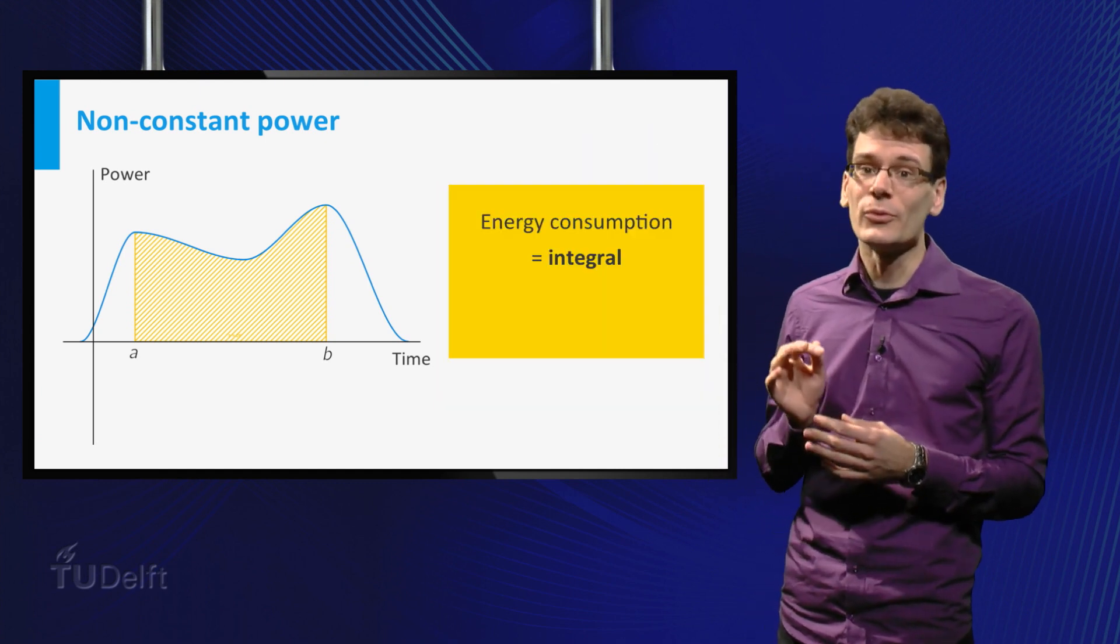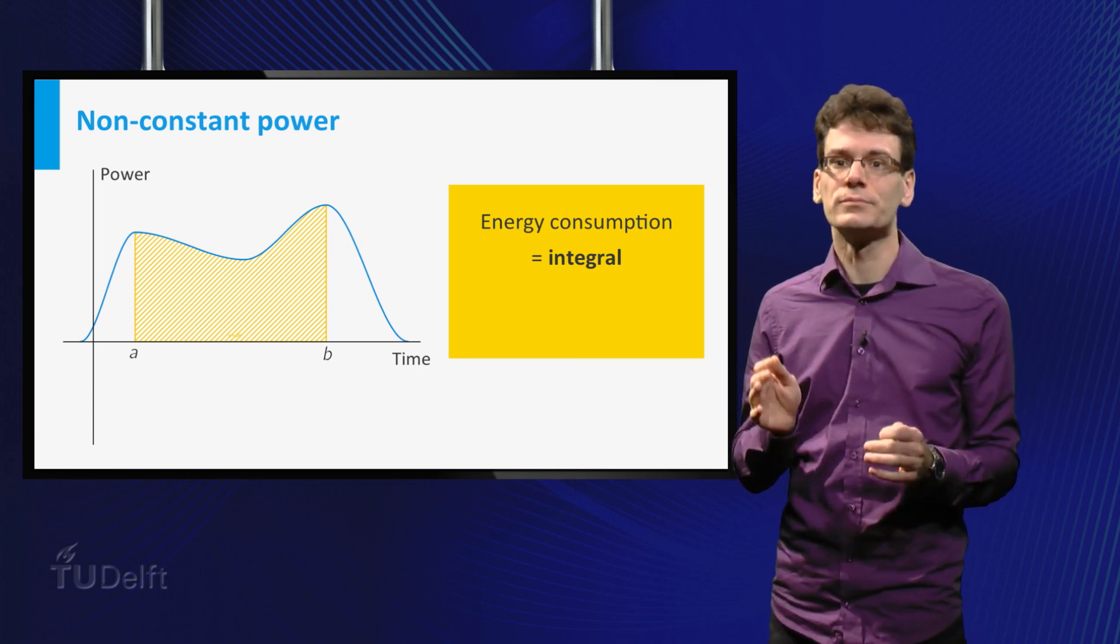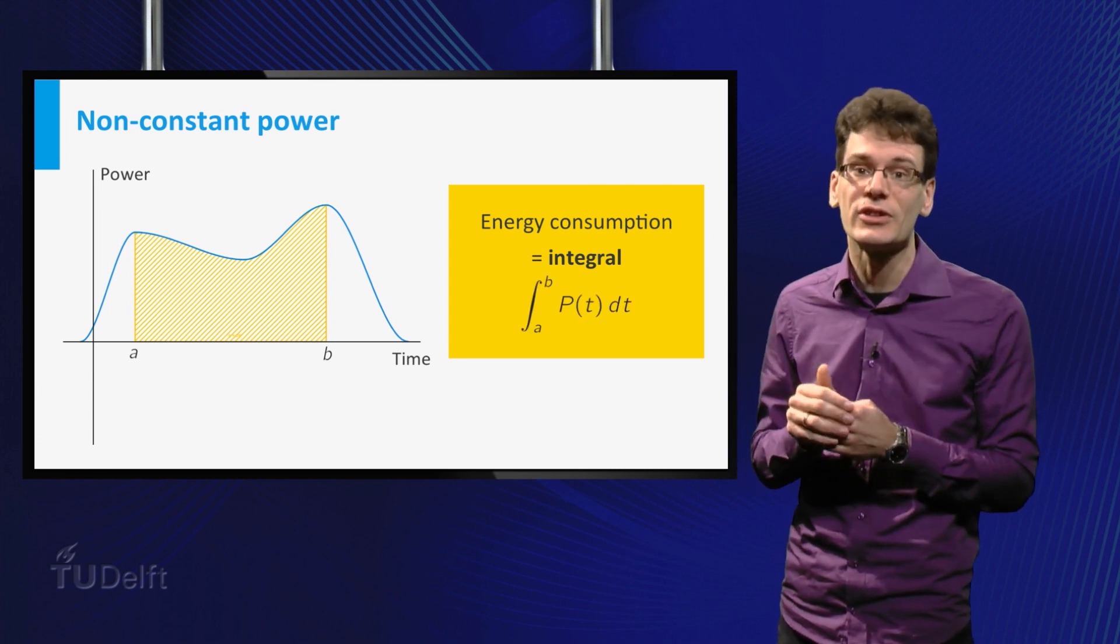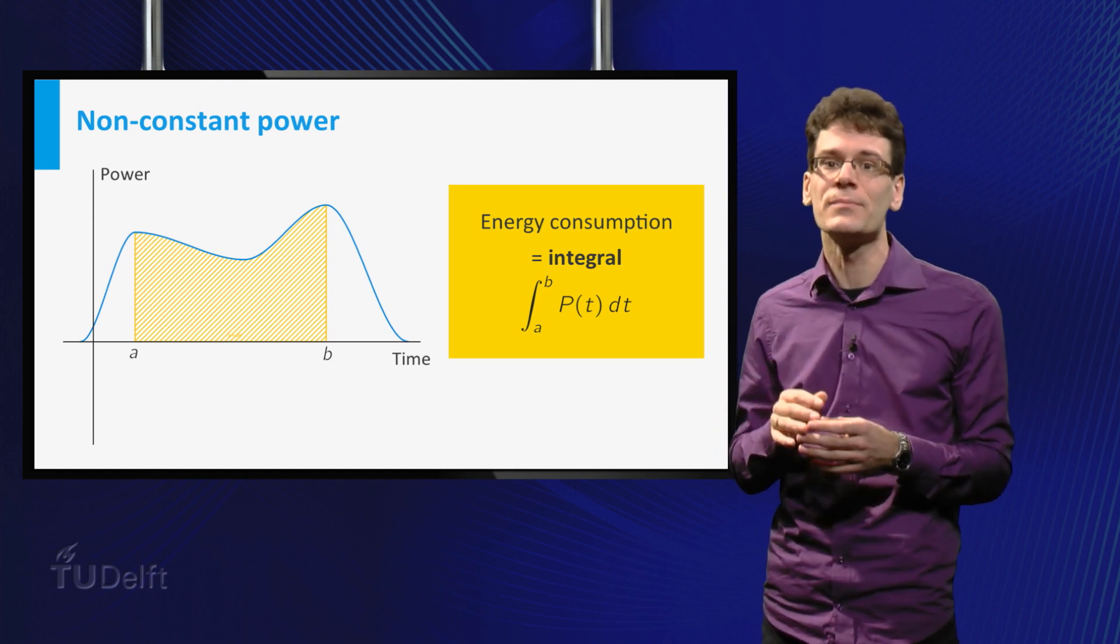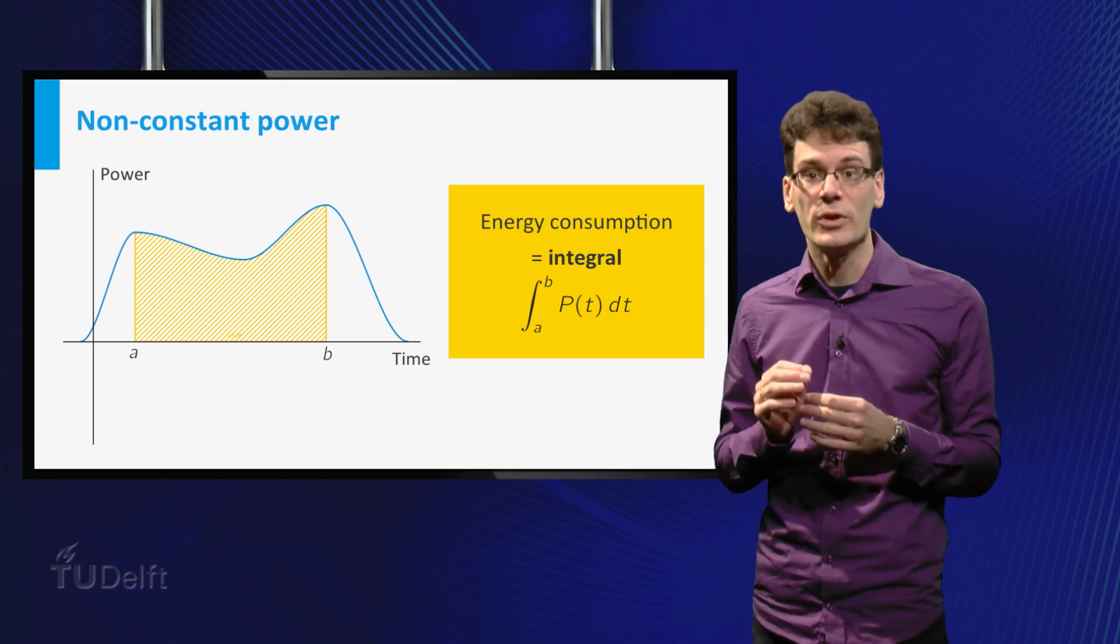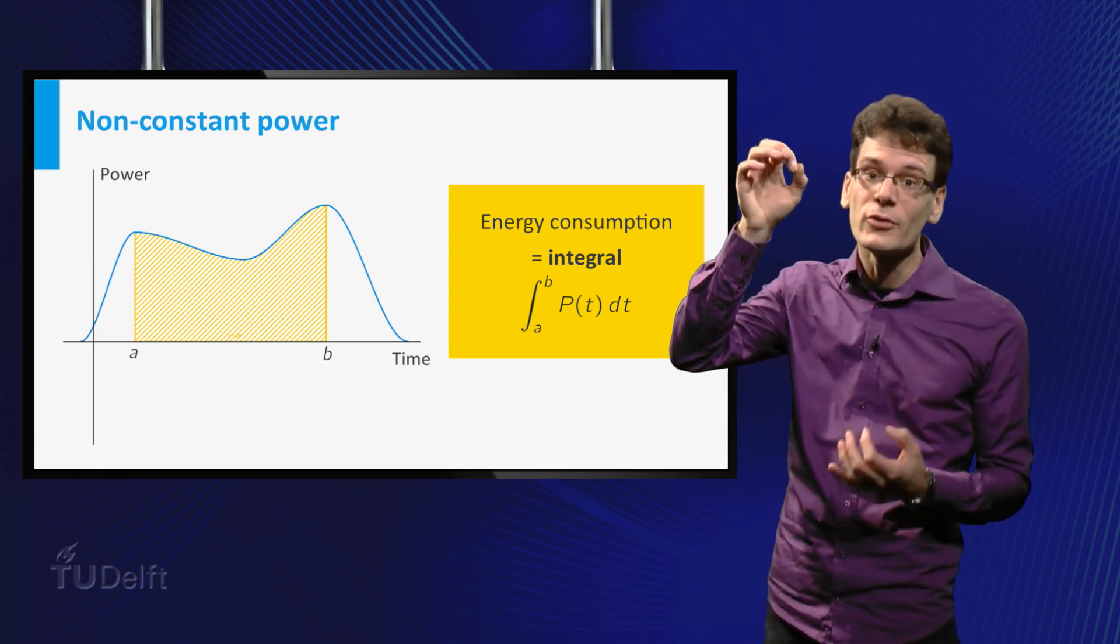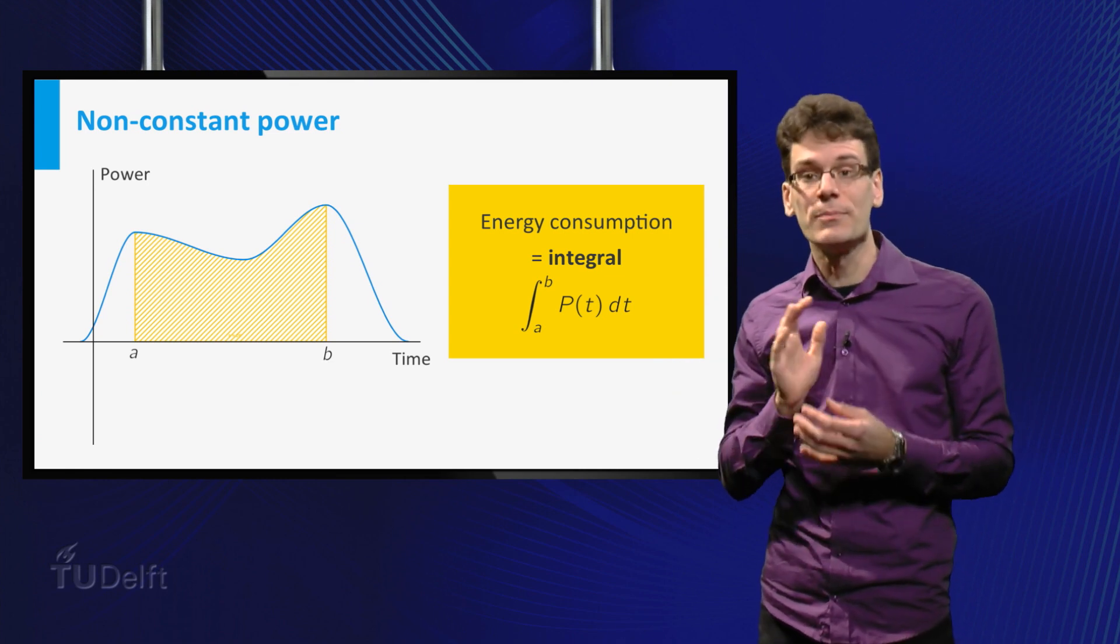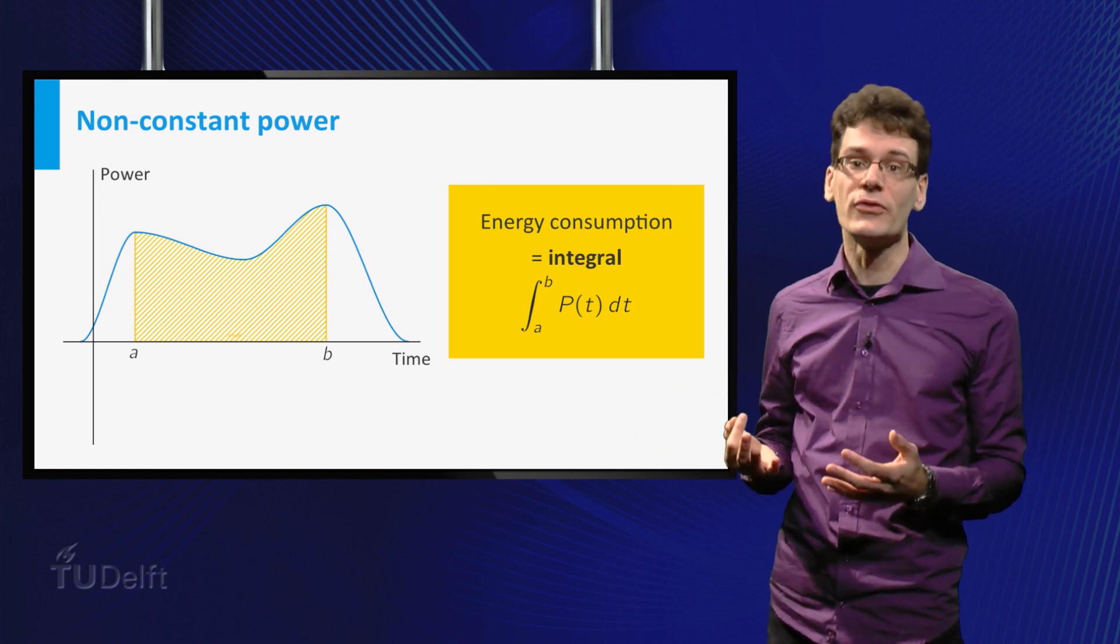The limit of the Riemann sums, as the size of the delta Ts goes to zero, is called the integral of the function on the given interval. In this case, we can say that the total energy consumption is equal to the integral of the function P(t) for t ranging from t equal to A to t equal to B. We denote it as follows. The integral is denoted as a stretched S, the interval boundaries go below and above this sign, and it is followed by the function P(t) and ended with dt. You can think of the dt as a limit of the delta Ts.